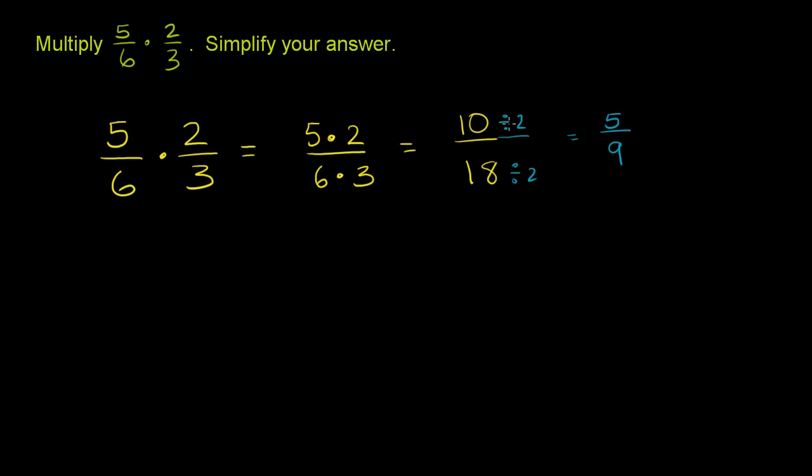Now you could have essentially done this step earlier on. You could have done it actually before we did the multiplication. You could have said, I have a 2 in the numerator, and I have something divisible by 2 in the denominator. So let me divide the numerator by 2, and this becomes a 1. Let me divide the denominator by 2, and this becomes a 3.